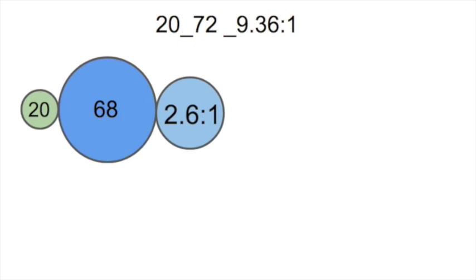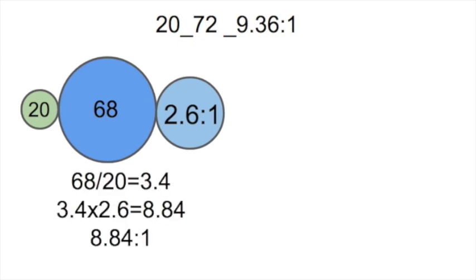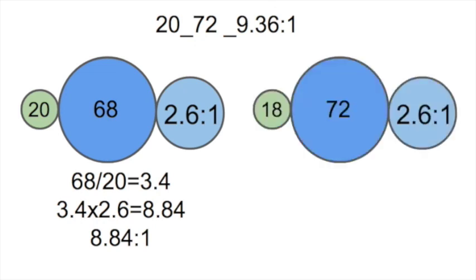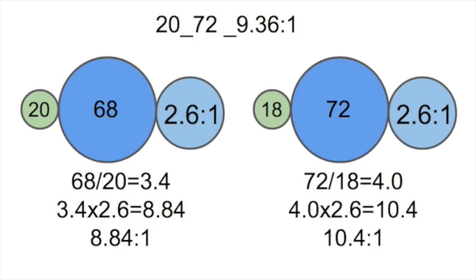Now let's make the gears smaller. Going from a 72 to a 68-tooth spur gear: 68 divided by 20 is 3.4, times 2.6 is 8.84 — a final drive ratio of 8.84-to-1. By making the spur gear smaller, we went to a higher or taller gear ratio. Now let's make the pinion gear smaller, going from a 20 to an 18: 72 divided by 18 is exactly 4, times 2.6 is 10.4 — a final drive ratio of 10.4-to-1. By making the pinion gear smaller, we went to a lower or shorter gear ratio.